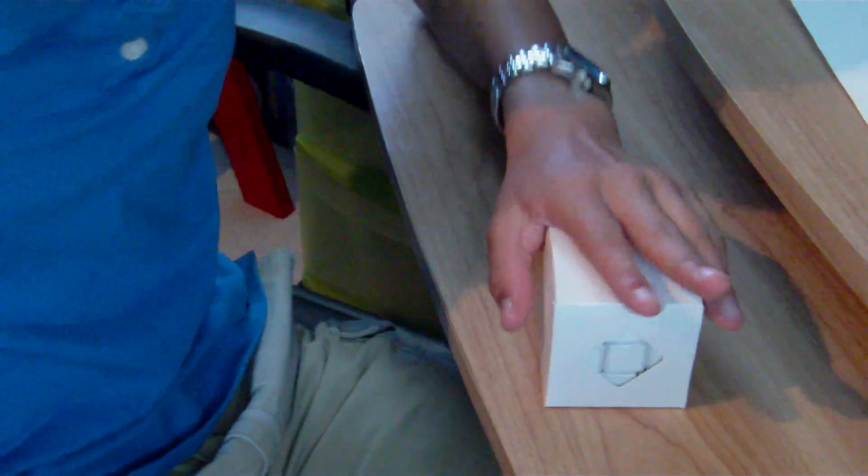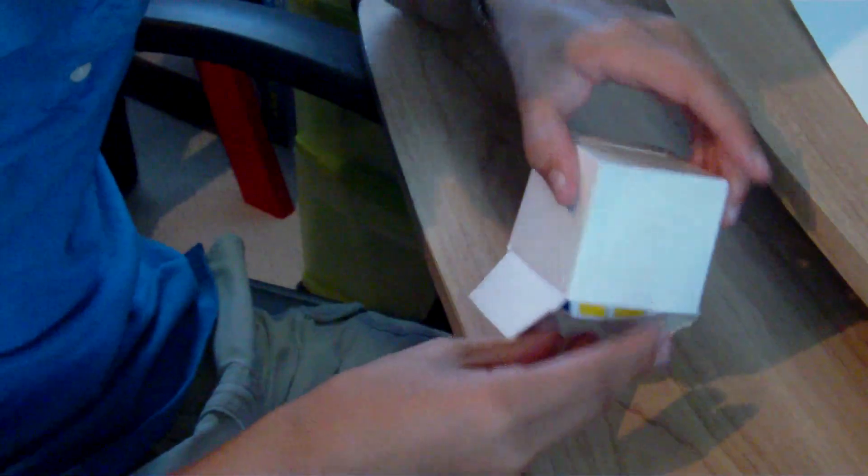Alright, let's check out the box that came with the cube. Basically, you just have a blank white box, but you have this little opening to get a cool sneak peek of the cube. So, when you open the box, you get the QJ Pillow 3x3.